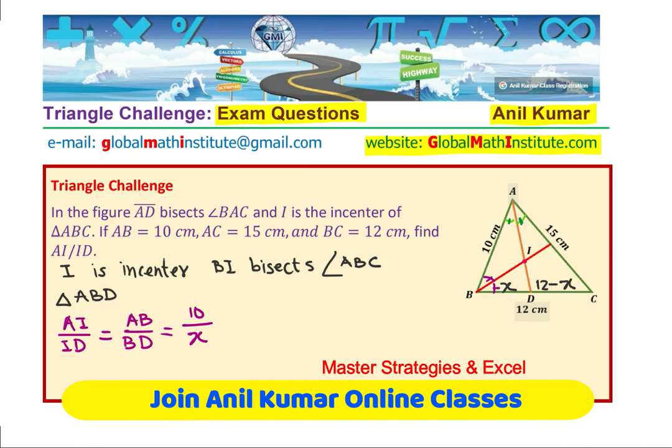To find the value of X, we should use the other triangle and then find the value of X and this ratio AI over ID. So I hope the strategy is absolutely clear. At this stage, you can pause the video and then further look into my solution.